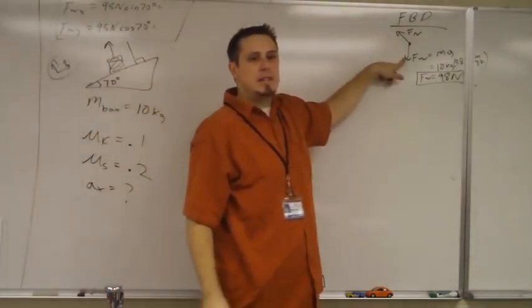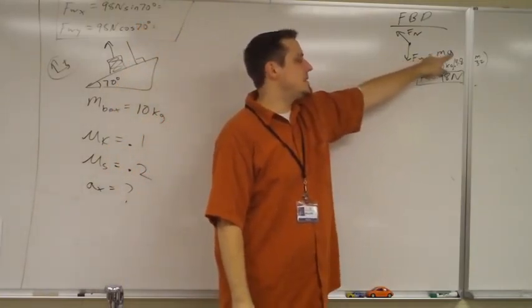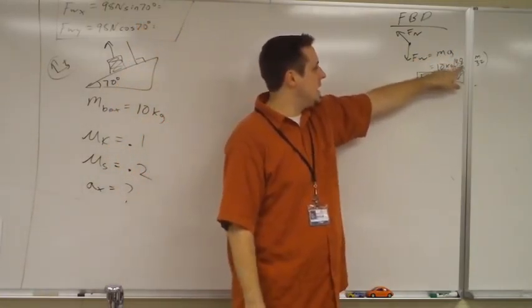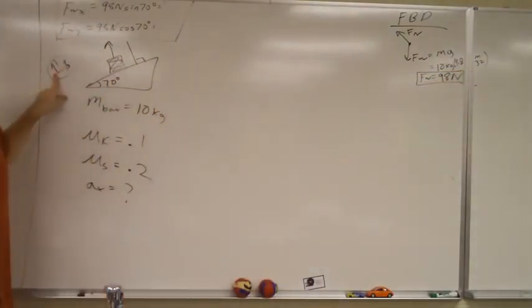Weight, okay? Weight always goes straight down. And the weight is M times G. The mass of the object was 10, because our gravity is 9.8. Now remember, we have a rotated X-Y axis.